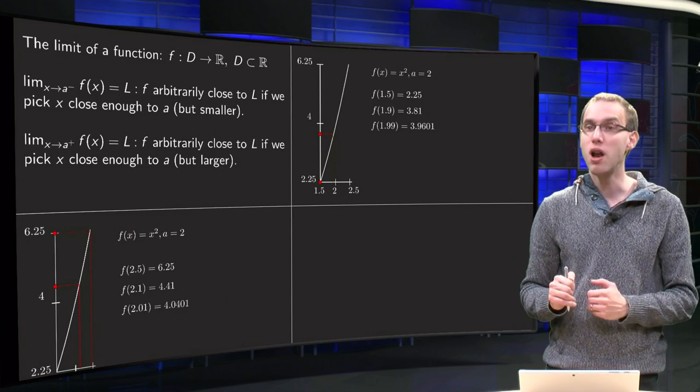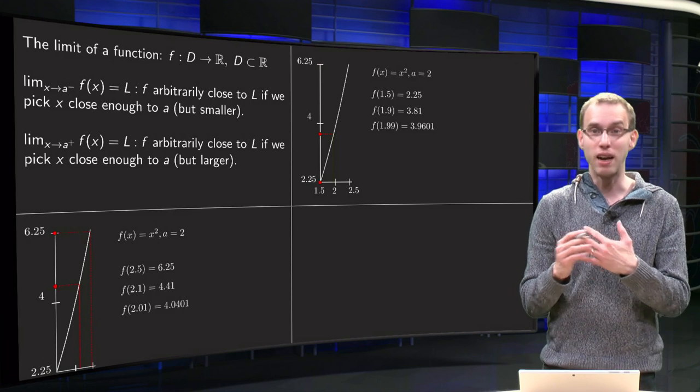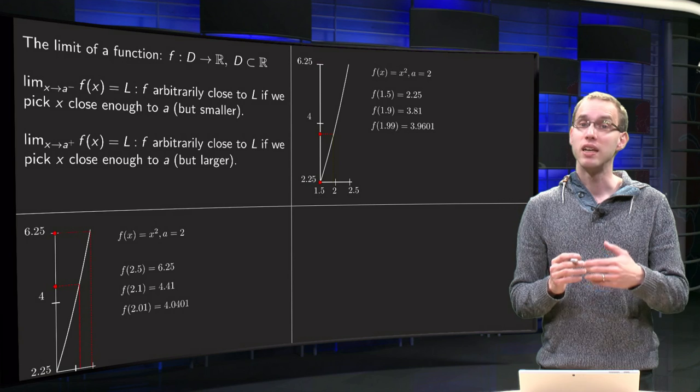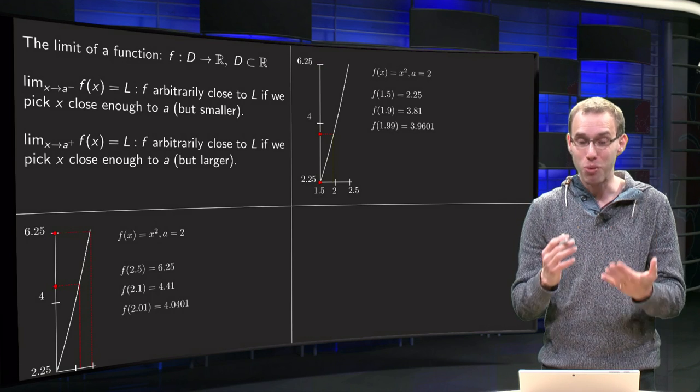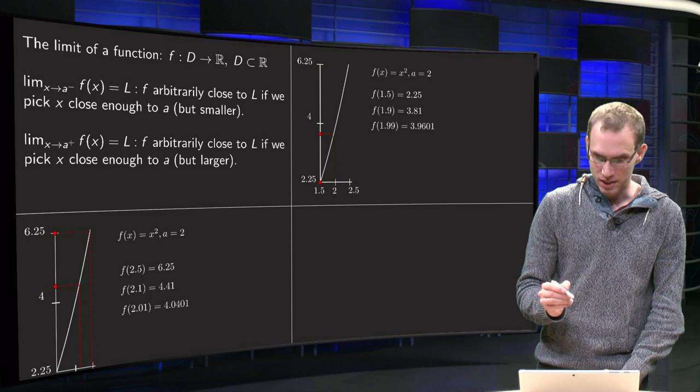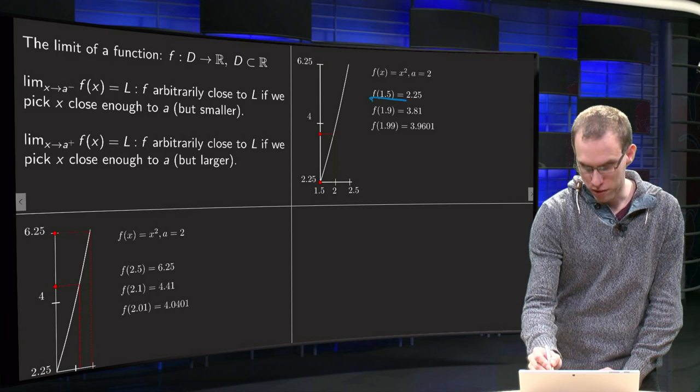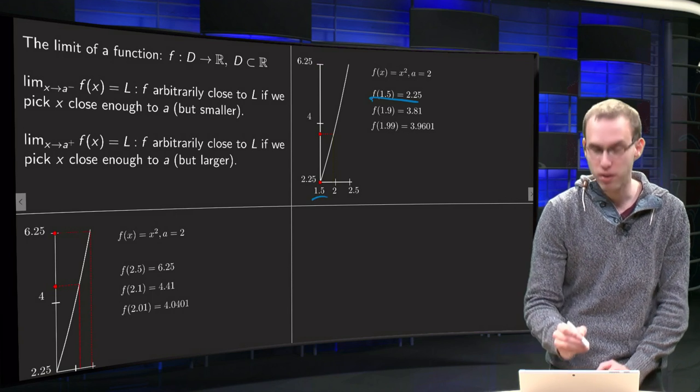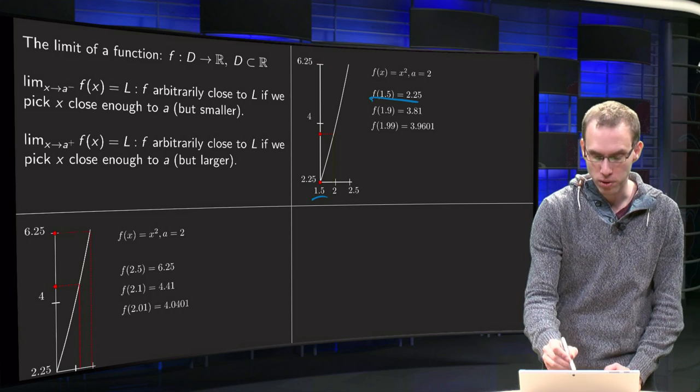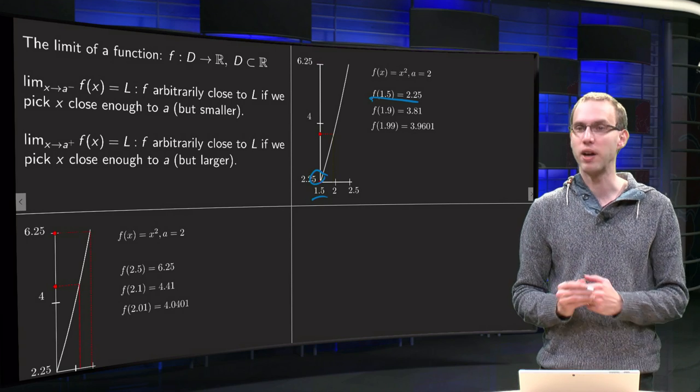So what happens if we go from below? Again, f equals x squared, a equals 2. Now we will take values of x smaller than 2 and see what we get. So let's start with 1.5, so x equals 1.5 over here, and compute the function value 1.5 squared equals 2.25 over here.